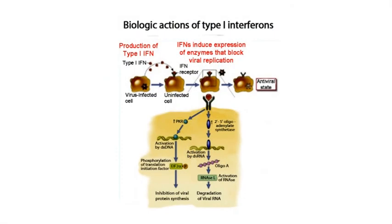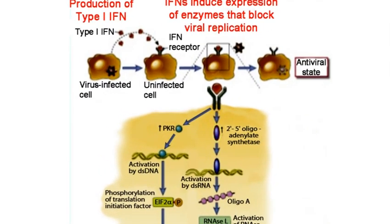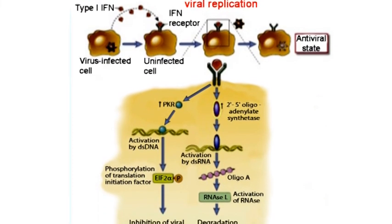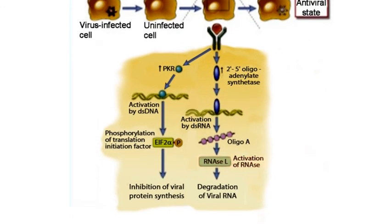Binding of interferon alpha or beta to their receptors gives signals to the cell to express many genes. One of these gene products is an enzyme 2'5' oligoadenylate synthetase, or 2,5A synthetase, which activates a ribonuclease RNA-L that degrades viral RNA. Other gene products also have roles in inhibiting viral replication. Another gene product is a specific protein kinase called double-stranded RNA-dependent protein kinase, or PKR, which inactivates protein synthesis and thus blocks viral replication in infected cells.